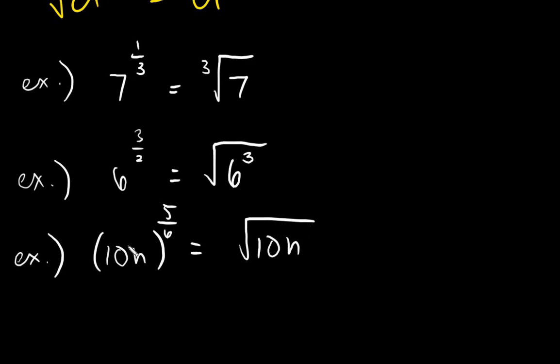What happens here is we can actually separate this. This is 10n raised to 5, raised to 1/6. Remember, when you have multiple exponents, we just simply multiply. It's the same as 5/6. So technically, I will give the exponent 5 to 10 and to n.